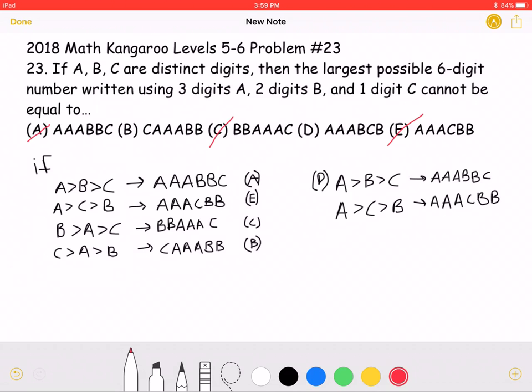If C is greater than A, which is greater than B, then our number would be CAAABB, which is answer choice B. And it's also incorrect.